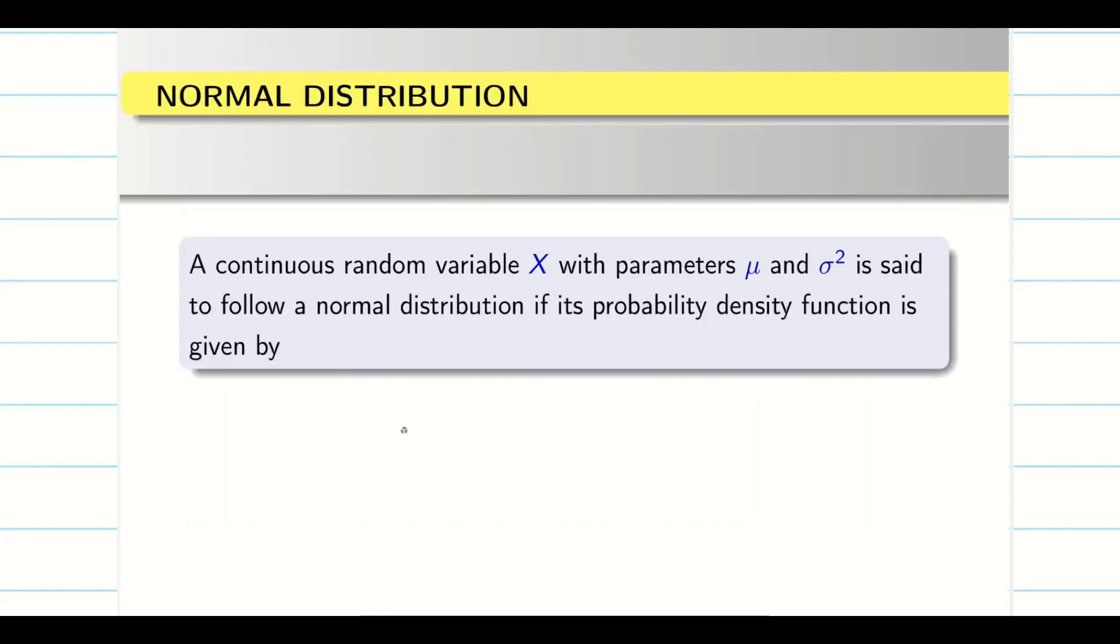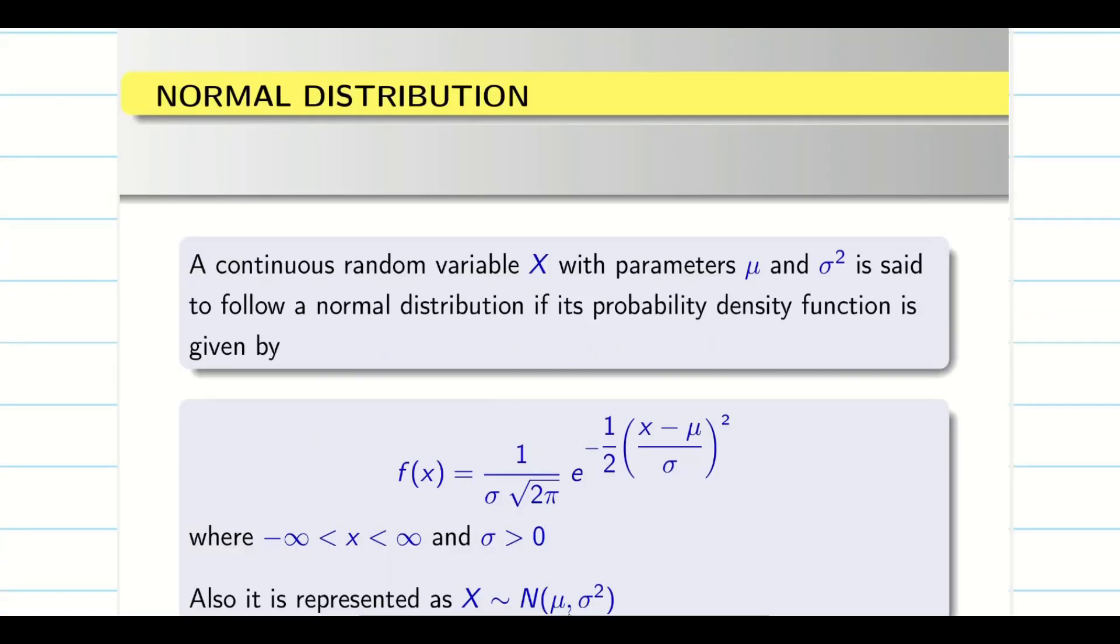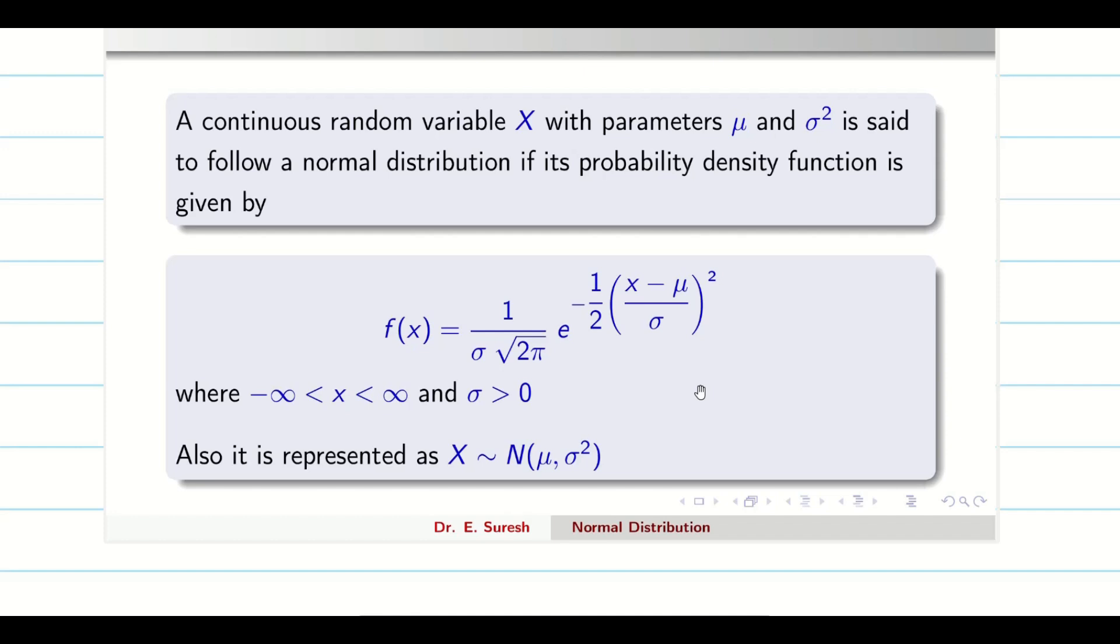So now, the parameters of normal distribution is μ and σ². As usual, binomial distribution, do you remember, n and p are parameters. For Poisson, λ is parameter. Now, for normal distribution, the parameters are what? Mean and variance. That is μ and σ² guys. And this is the formula for normal distribution. And we note it like this. So x varies from minus infinity to infinity and my standard deviation cannot be 0 and it cannot be negative also. It is going to be greater than 0.